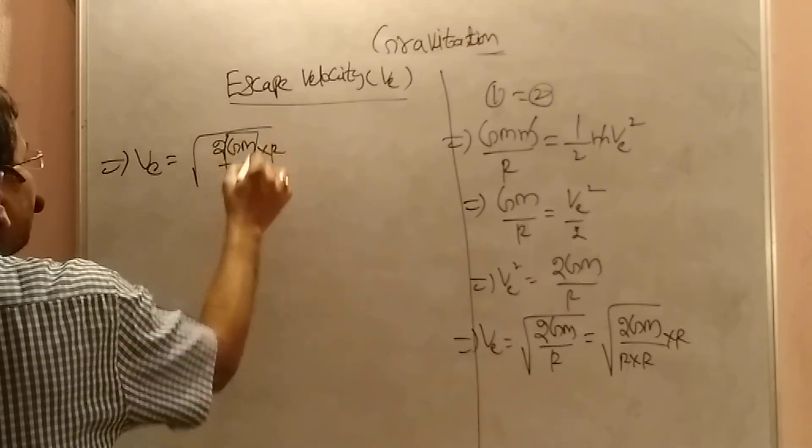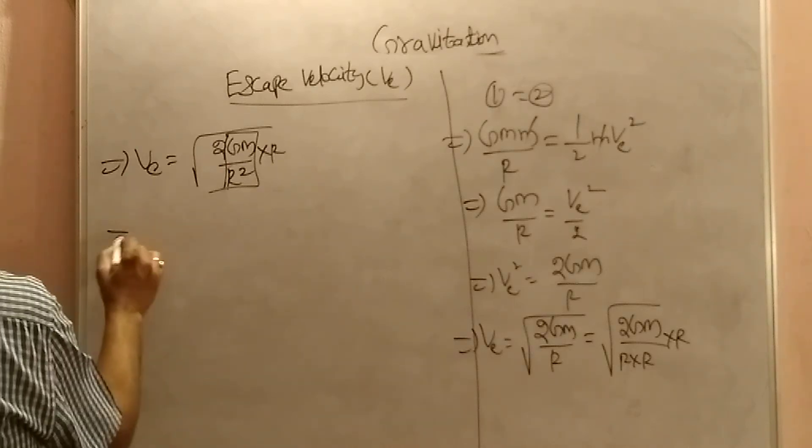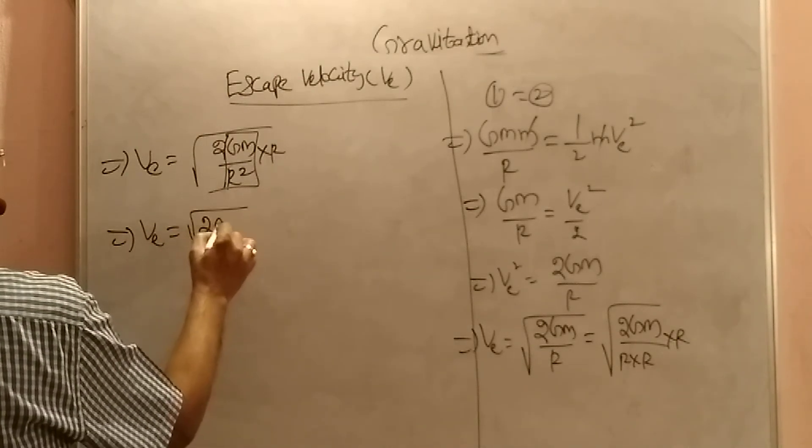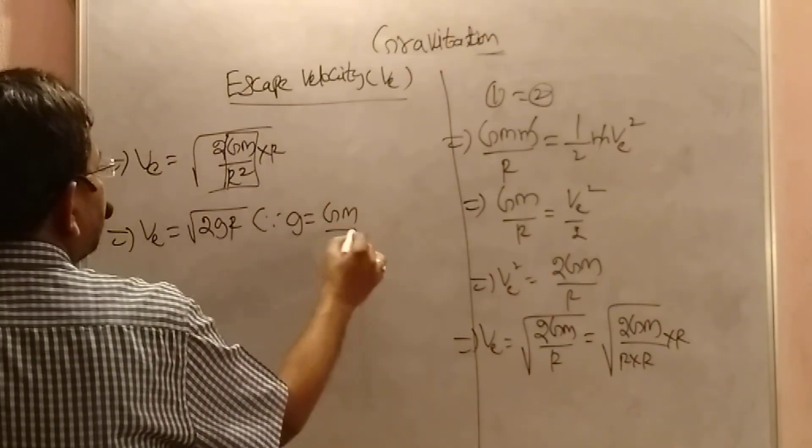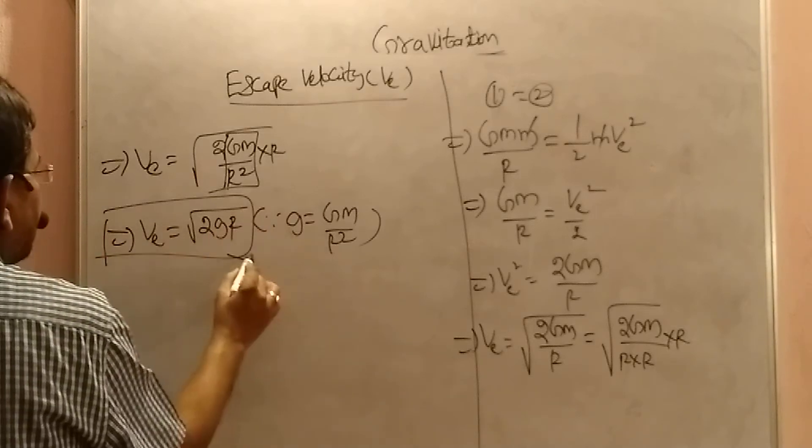So this GM by r square I am writing as small g. So v equals to root 2 g r, since g equal to GM by r square. This is my equation number 3.